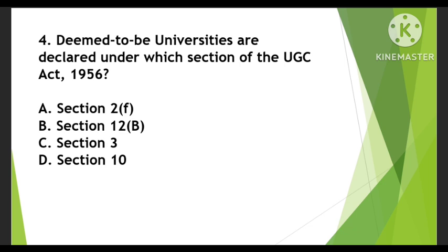Fourth question: Deemed universities are declared under which section of the UGC Act 1956? Options are Section 2F, Section 12B, Section 3, or Section 10. The right answer is Section 3. Deemed to be universities are declared under Section 3 of the UGC Act 1956.